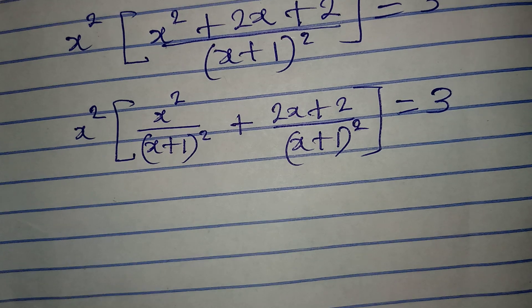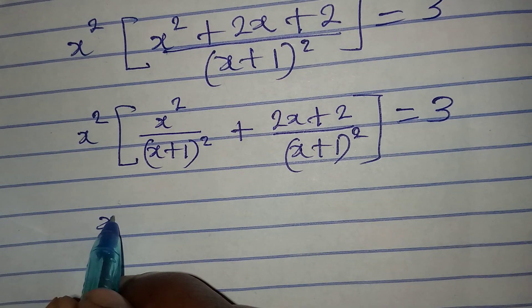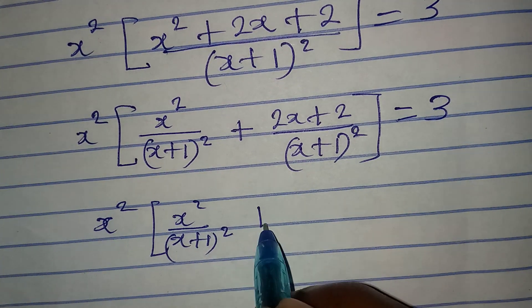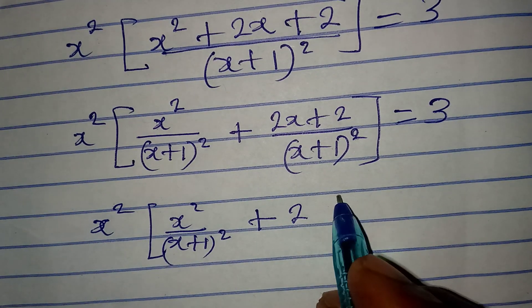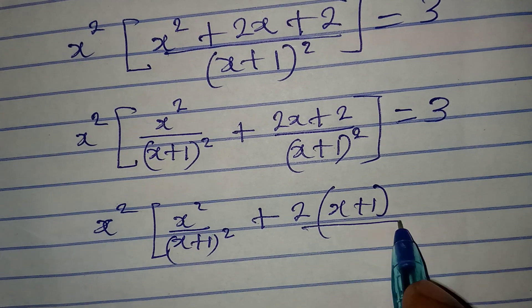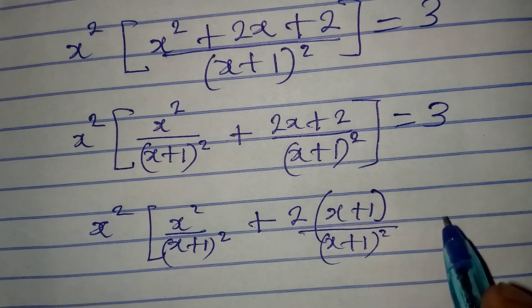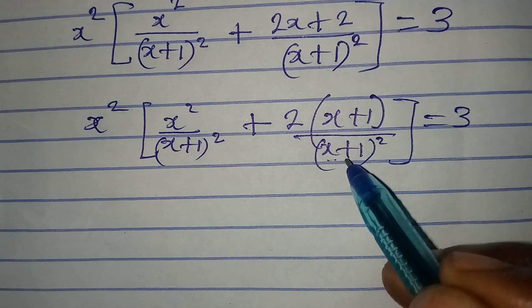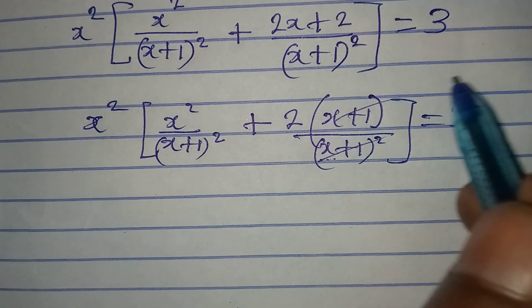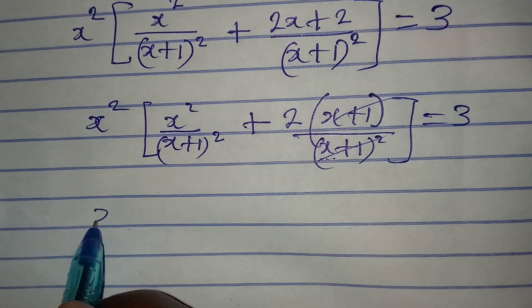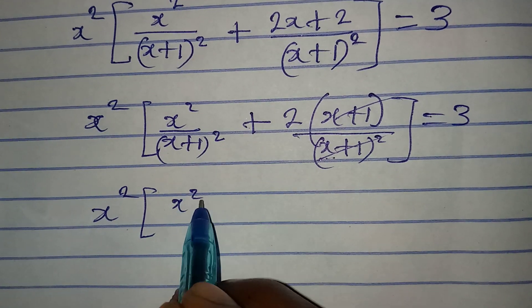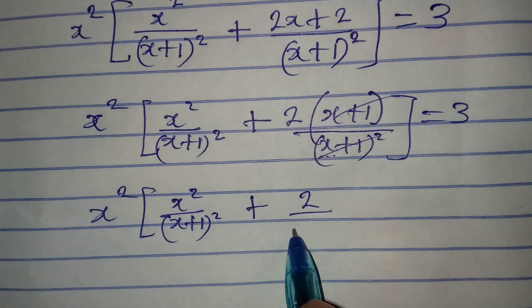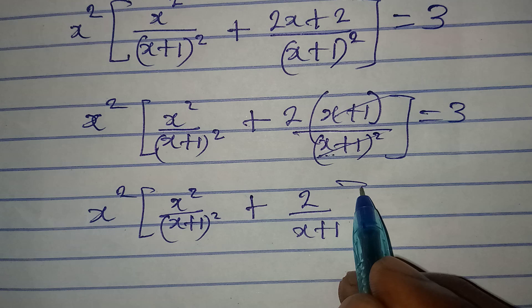The next thing I'm going to do is: we have x squared times x squared over x plus one squared, then plus — two is common so I factor out two — so I have x plus one in the bracket over x plus one squared, which is equal to three. We have x plus one in two places so they can cancel, leaving one x plus one. Continuing: x squared times x squared over x plus one squared, plus two over x plus one, equal to three.